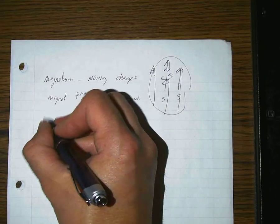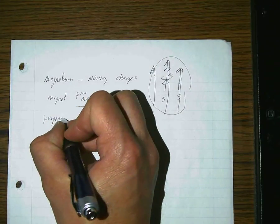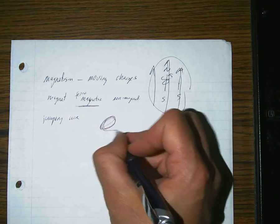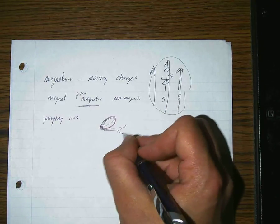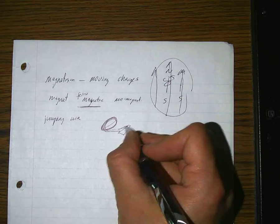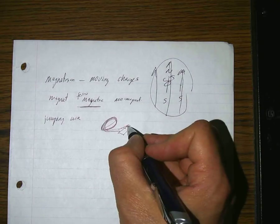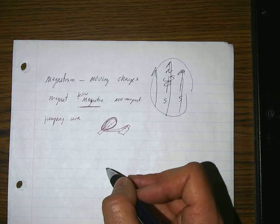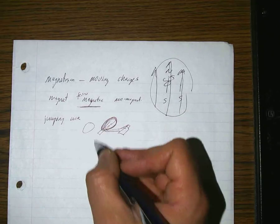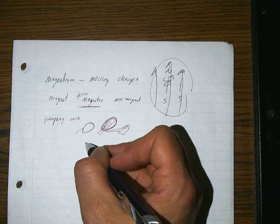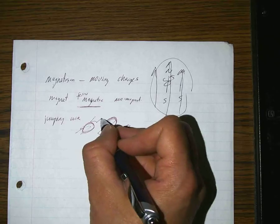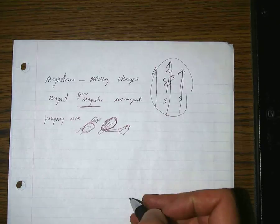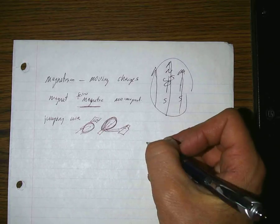We looked at the jumping wire effect, which is how you create an electromagnet. You take a wire, hook it up to a battery, and it becomes an electromagnet. Stick a chunk of iron in there and it becomes stronger. Stick a real magnet next to it and this will jump, because it'll be attracted or repelled. So that can make speakers, motors, and meters.